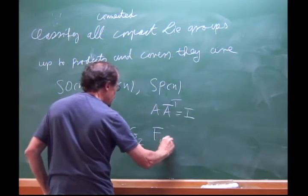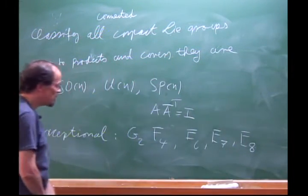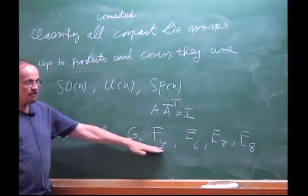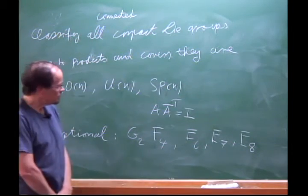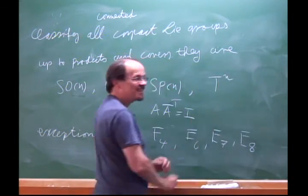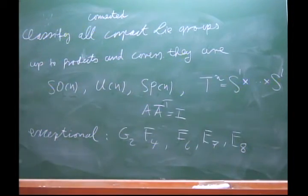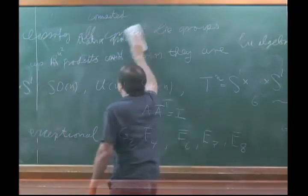Those five exceptional groups are much more difficult to describe and study. Together with the classical matrix groups SO(n), U(n), Sp(n) and the five exceptional ones, I can take products and covers, and add tori S¹ × S¹ × ⋯ — that's it. That's the classification theorem, and we're going to spend a large part of part one proving it.